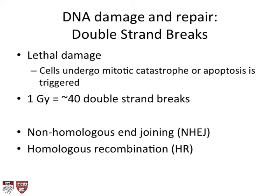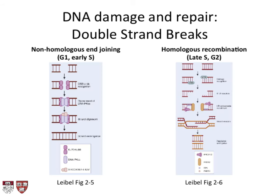Double-strand breaks, however, are what cause lethal damage, and cells will undergo mitotic catastrophe or apoptosis. One gray of radiation causes about 40 double-strand breaks on average. These are repaired through two mechanisms: non-homologous end-joining — the same mechanism B cells and T cells use to create variable regions — or homologous recombination, which ensures fidelity during DNA replication. Non-homologous end-joining is very error-prone, just sticking the ends back together. Homologous recombination uses the template strand from the sister chromatid and can repair DNA with no loss of information.